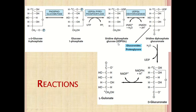UDP glucose is then converted into UDP glucuronate with the help of dehydrogenase enzyme. UDP glucuronate is converted into D-glucuronate, and D-glucuronate is finally converted into L-glucuronate.